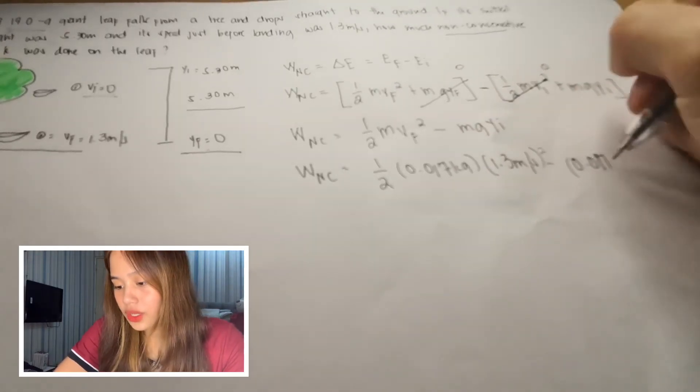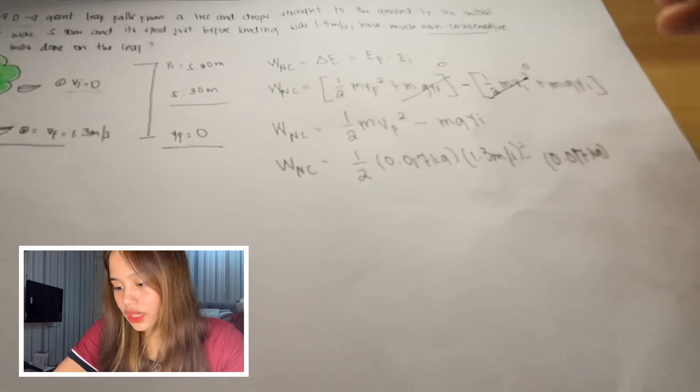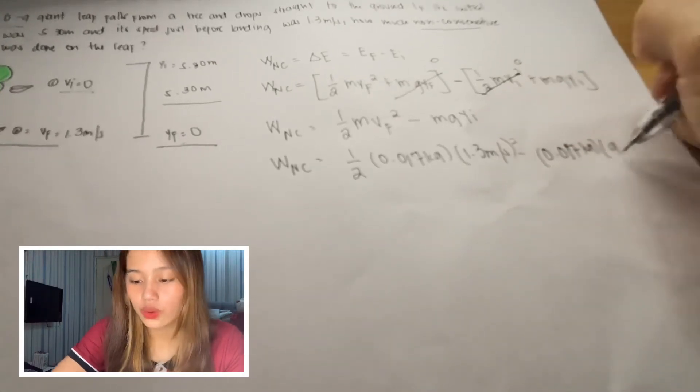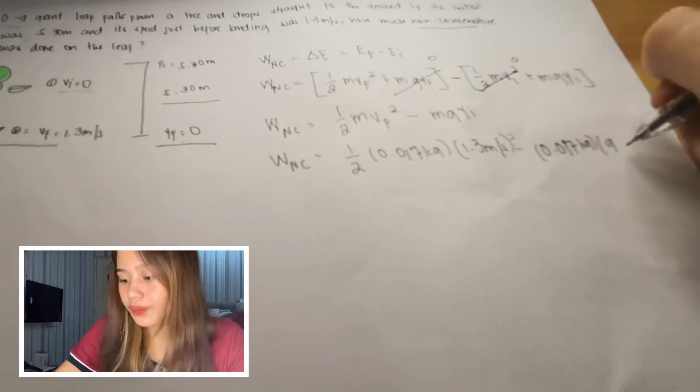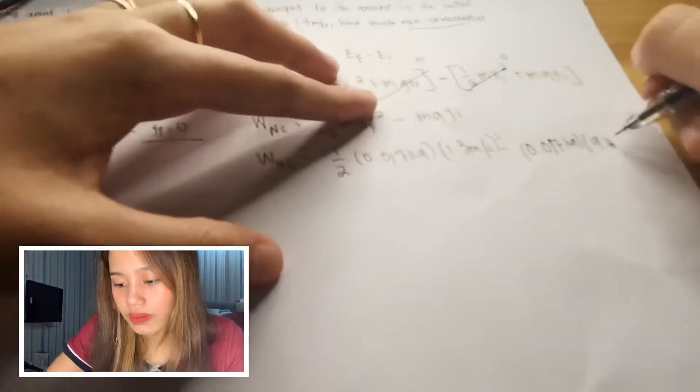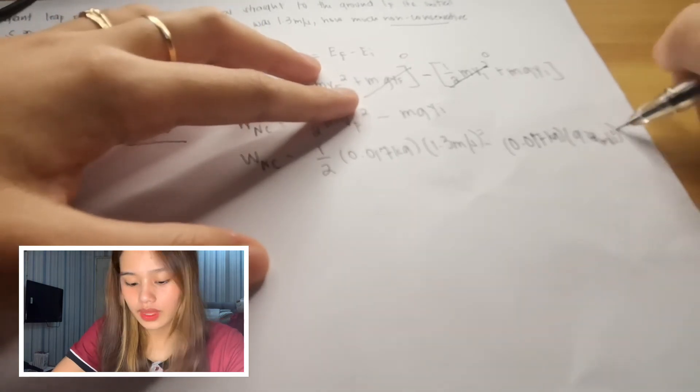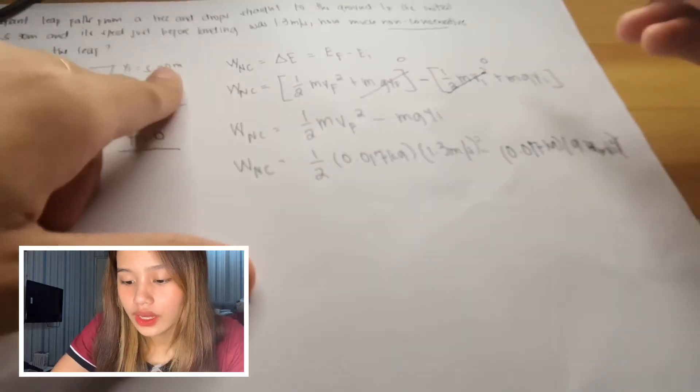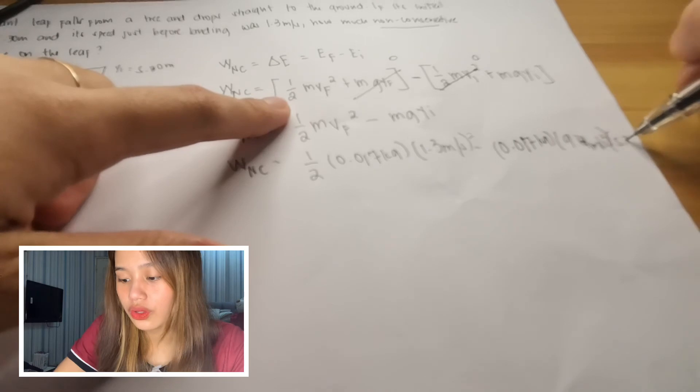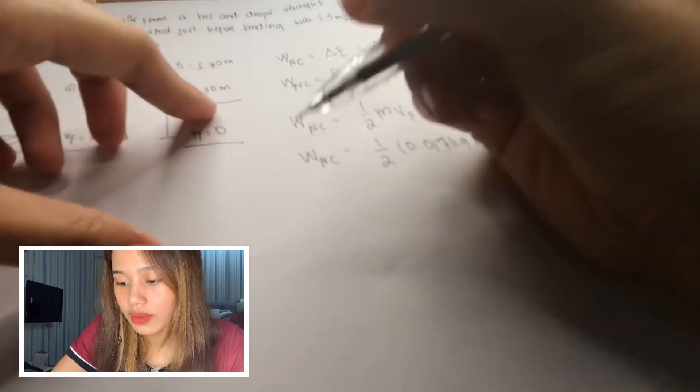And our final velocity of 1.3 meters per second quantity squared minus the mass again 0.017 kilograms times our gravity of 9.81 meters per second squared times our initial position, this one, which is 5.3 meters.